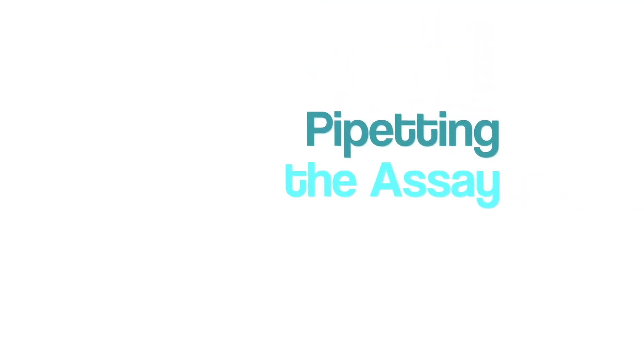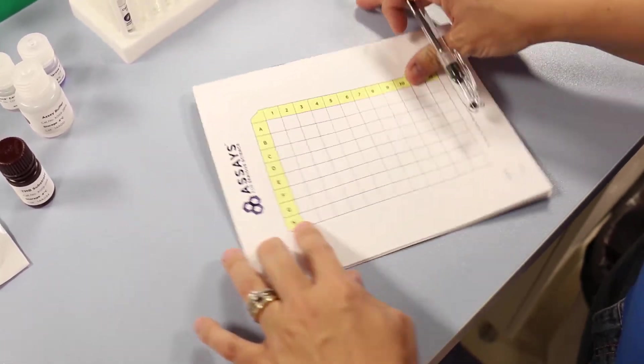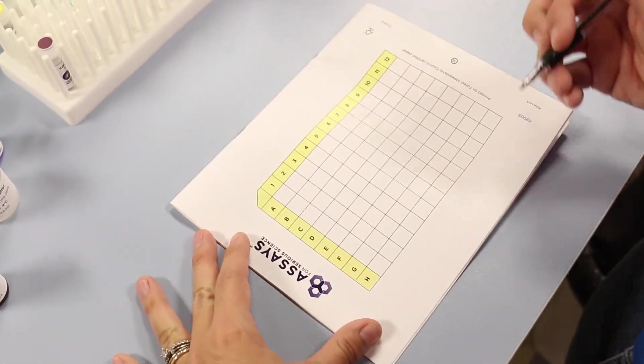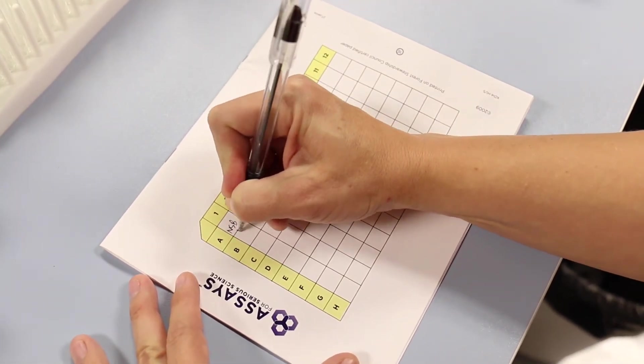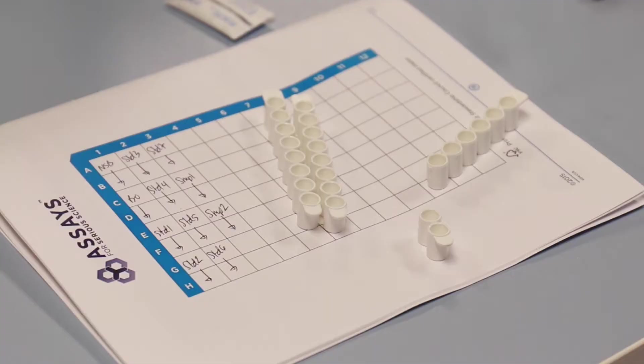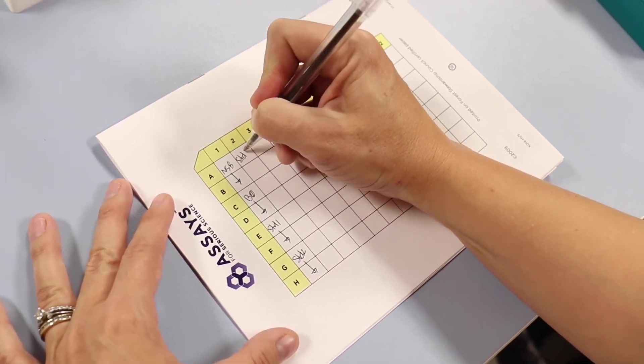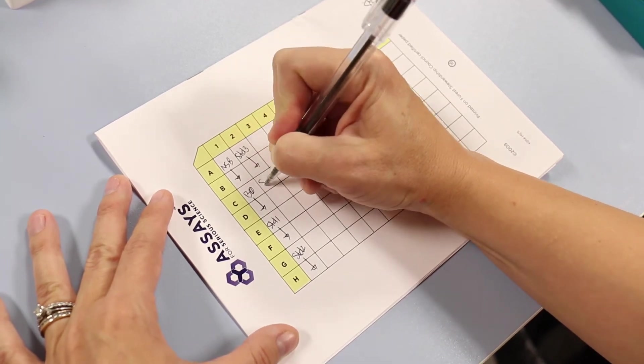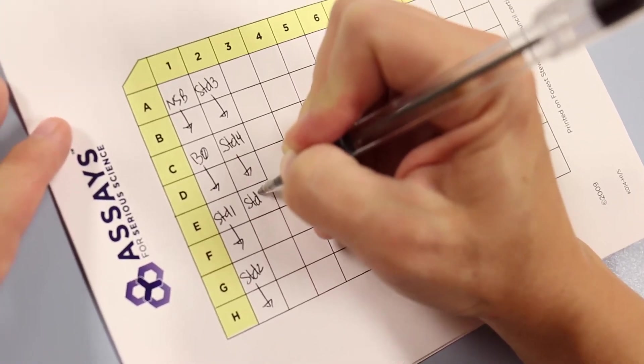Pipetting the assay: Outline the position of each sample on the assay layout sheet provided on the back page of each kit protocol. Our break-apart strip well plates allow you to use just the wells you need for your experiment. If you pipette your standards and samples down the columns, you'll be able to get the best usage from the kit.